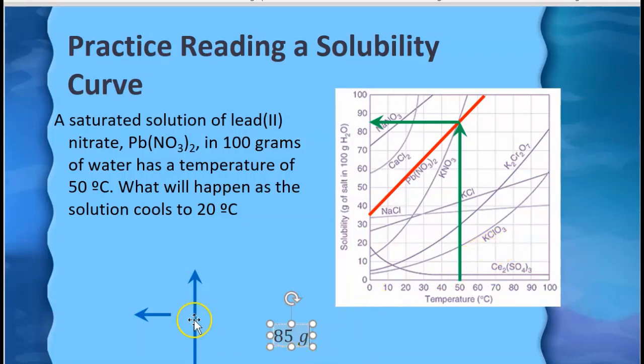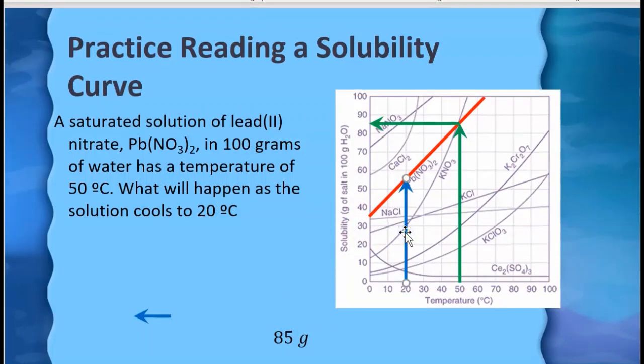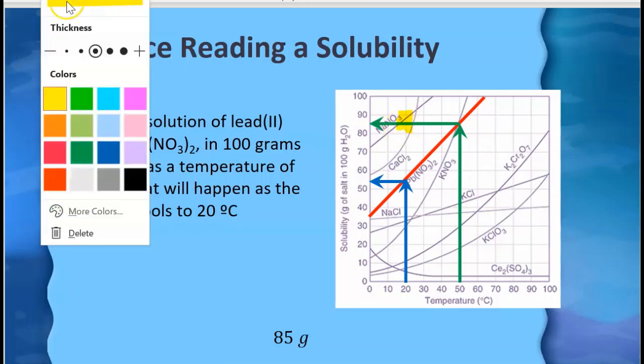So if I cool this solution down to 20°C, then I can take this arrow and I'll put it here at the 20, and I can see that I should not be able to dissolve 85 grams at 20°C. In fact it's a considerably smaller number at 20°C. So if all 85 grams stayed in solution I would have formed a supersaturated solution because I would end up up here above the line.